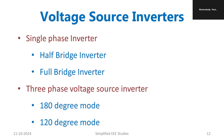Now let us look at the classification of VSI. According to supply, we have two types of single-phase inverters: the half-bridge inverter and the full-bridge inverter. For the three-phase voltage source inverter, we have 180-degree conduction mode and 120-degree conduction mode, referring to the conduction duration of the switching devices.